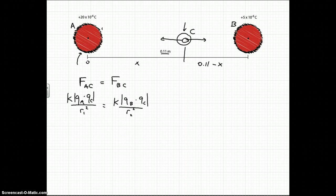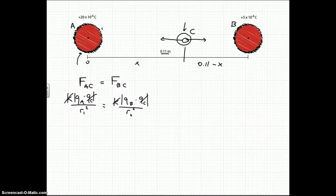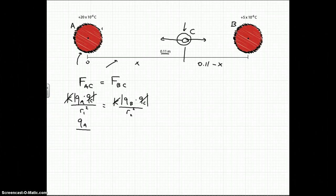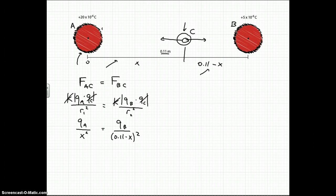Well, right away we can see some things that will cancel out initially. We get rid of the Ks, you don't have to worry about those. And also notice that the charge in the middle actually doesn't matter. So we can just cancel those out. So what you're left with is QA over this distance. Now this first distance here, R1, is just this x. So we can call this x squared. That's going to be equal to this QB. And this distance now is this 0.11 minus x.